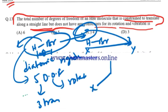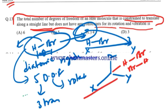Take X, Y, and Z coordinates. HBr is moving along the X coordinate, along the straight line.